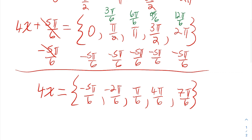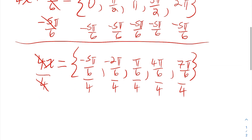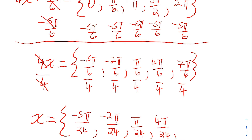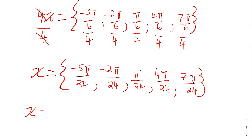The last thing I need to do to get x by itself is divide all five of these by 4 — both sides of all five equations. That way the 4's cancel, and I get the x values that are the key points for the function we were given. So when I divide each of these by 4, the first one becomes negative 5 pi over 24, the second becomes negative 2 pi over 24, the third is pi over 24, the fourth is 4 pi over 24, and the last is 7 pi over 24.